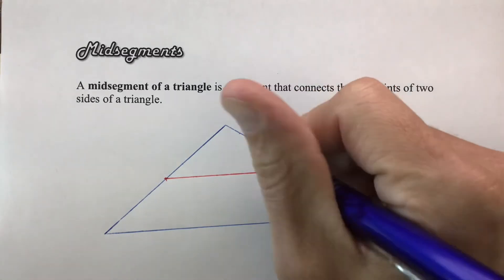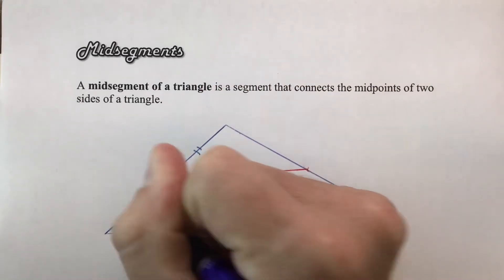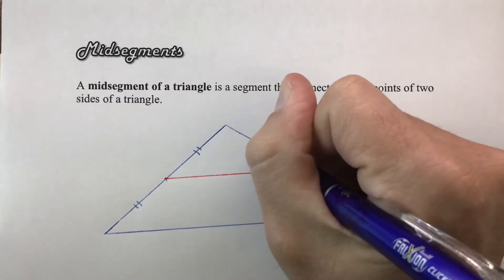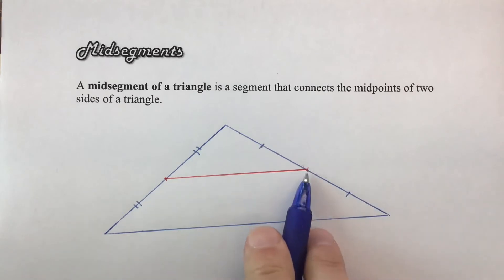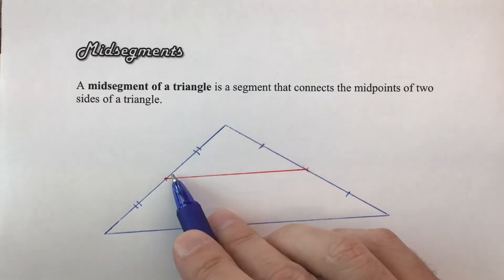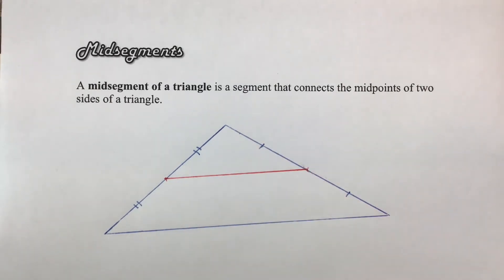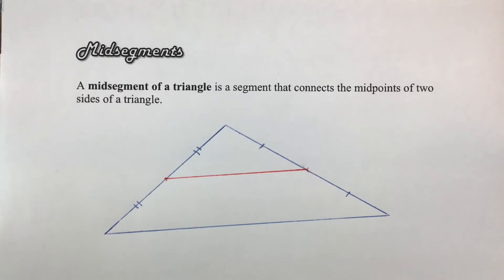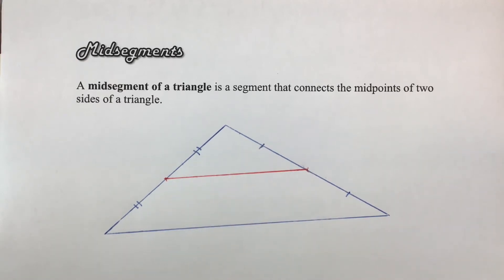This segment is congruent to that one because that was a midpoint, so I'll add single tick marks there. Over here I'll use double markings for the other midpoint — 3.5 versus four, so they aren't the same size and need different marks. Midsegments have two properties I want to identify. Take a moment to look at the midsegment and the whole triangle and see if you can figure out inductively what those two properties are.